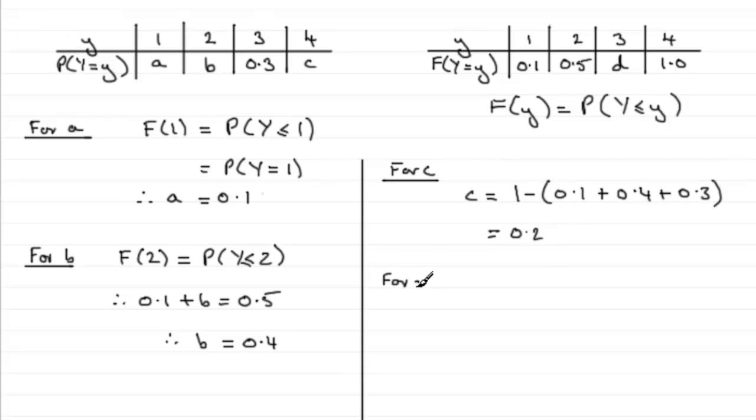And finally we've got to get d. So for d, how are we going to do that? Well for d, this is going to be F(3). So d equals F(3), and that is the sum of all the probabilities of Y being less than or equal to 3.